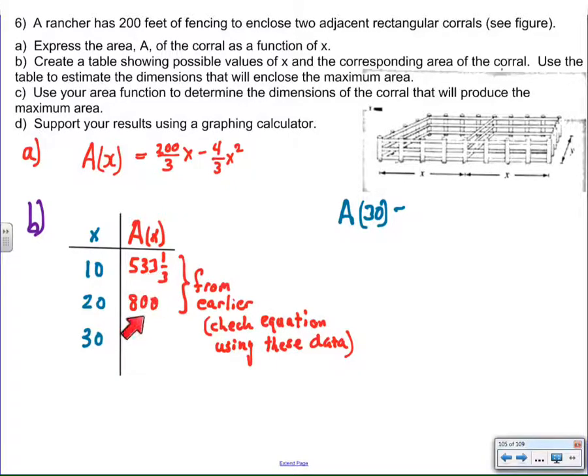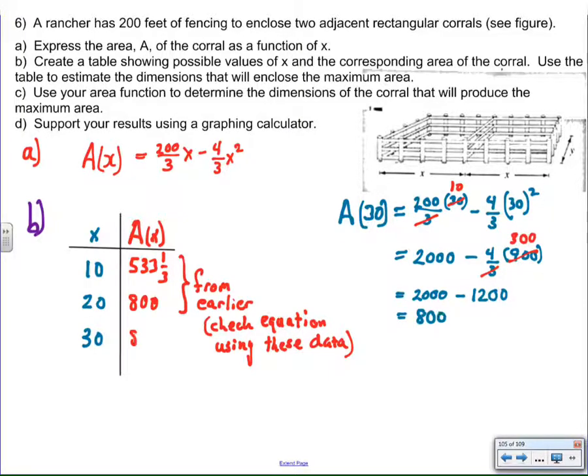Anyway, this is now 800 for 20, which is another piece of data that I collected. And now I'm just going to extend the table one further and substitute 30 for x. So the equation says we're going to have an area of 800 square feet, which is the same area as when I made x equal to 20. It's interesting.